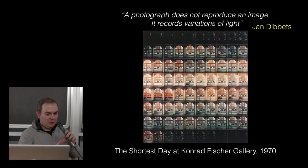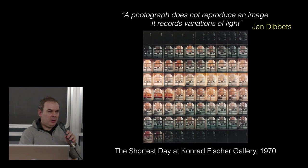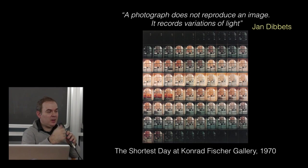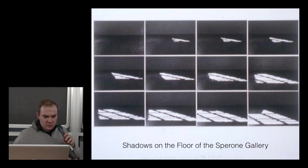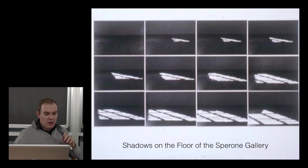Dibbets made a lot of pictures so you could see light changing over time. So the subject of his photograph is not the window of the gallery where he made it, but light changing. On the same day, he made four of these works in four places in the world — this one is called The Shortest Day at Korn Fischer Gallery in Germany. Other people were taking the pictures in other locations, meaning he designed the work and others executed it.